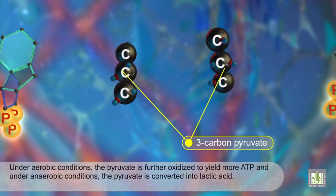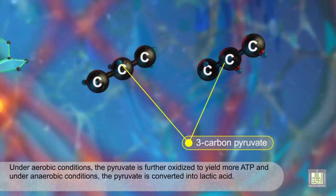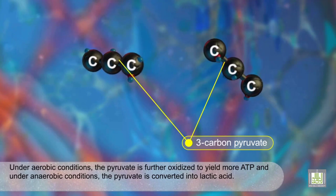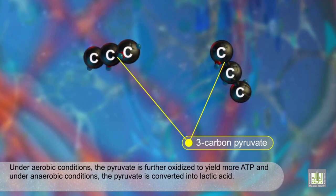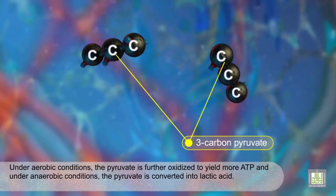Under aerobic conditions, the pyruvate is further oxidized to yield more ATP, and under anaerobic conditions, the pyruvate is converted into lactic acid.